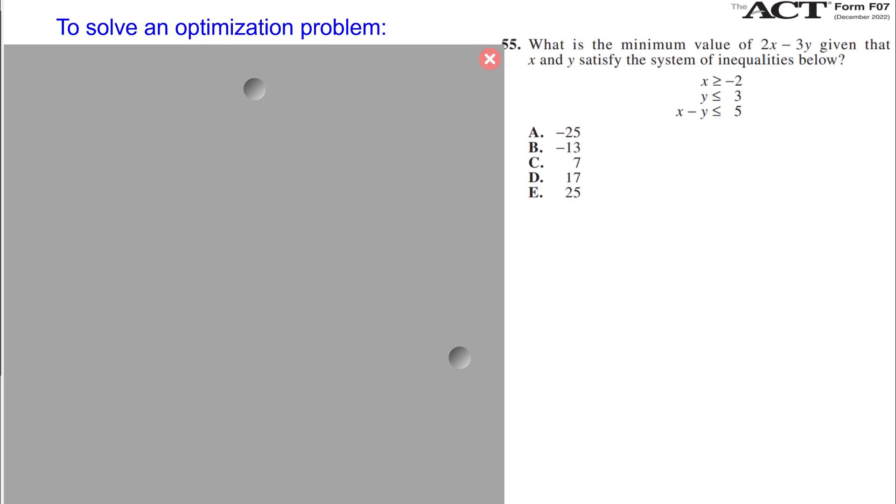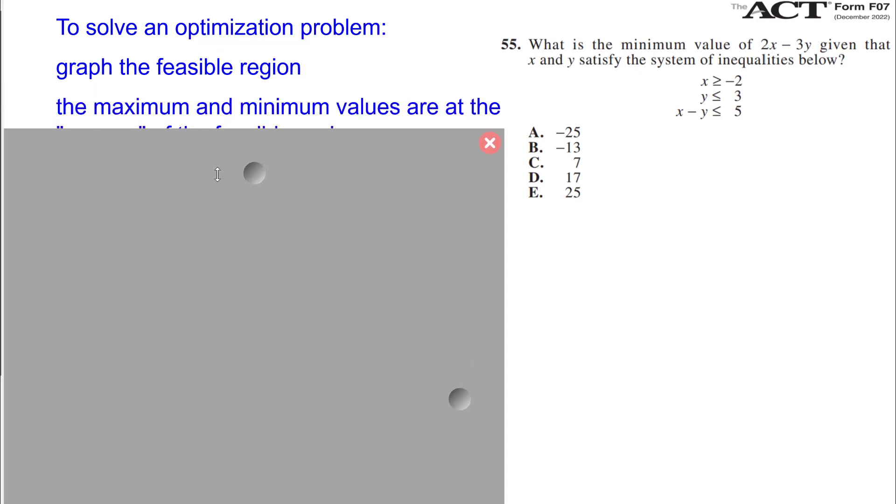We will solve this using the inequality app on the TI-84. Recall that to solve an optimization problem, which this is, finding a minimum or a maximum value, you first graph what's called the feasible region. And the maximum and minimum values are found at the corners of the feasible region.